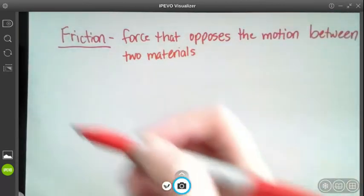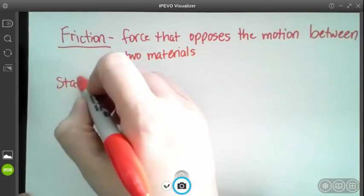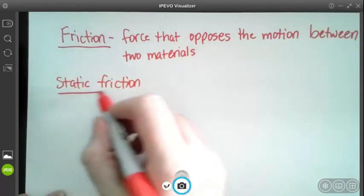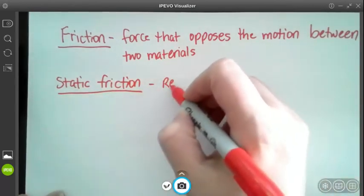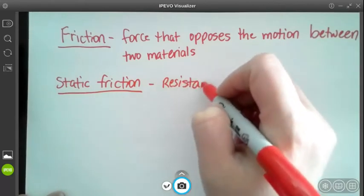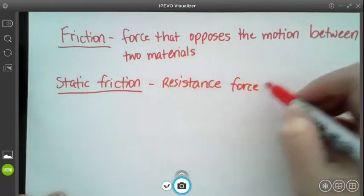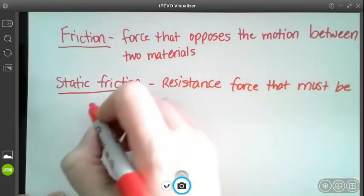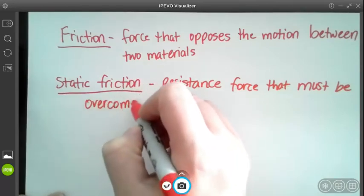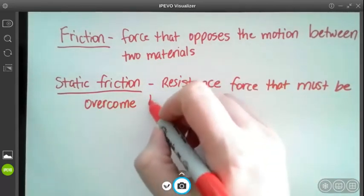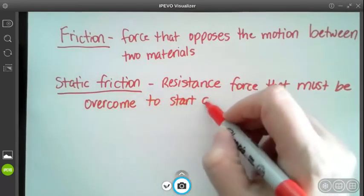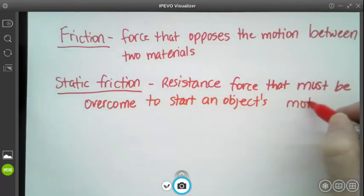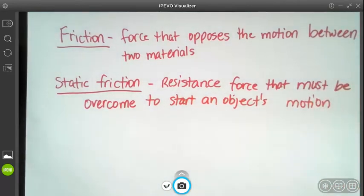There are different types of friction. The first one is called static friction. This is the resistance force that must be overcome to start an object in motion or to start an object's motion. So that's when an object is just sitting still on a surface.